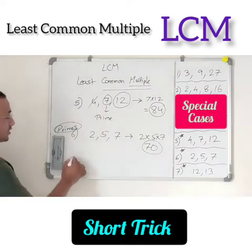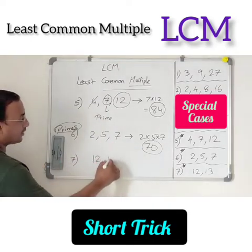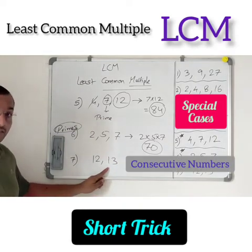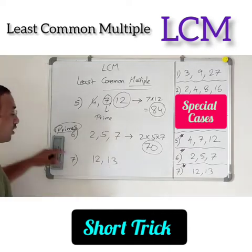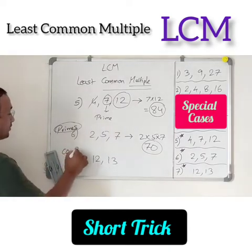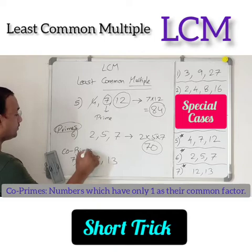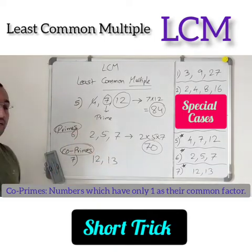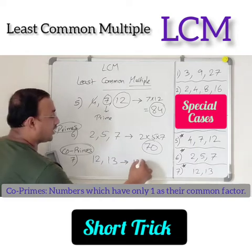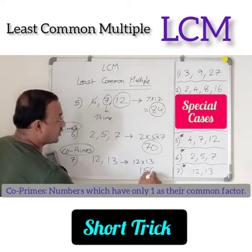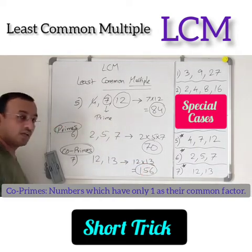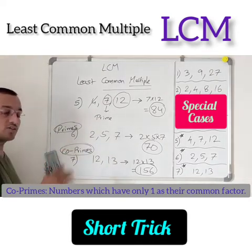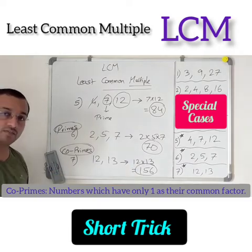Let's try one more: 12 and 13. What are these two? Consecutive numbers — and we can also call them co-primes. In the case of co-primes, just multiply and find the LCM. 12 × 13 = 156. So the LCM is 156. In case of primes as well as co-primes, just find the product and write it as the LCM.